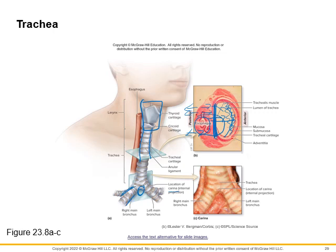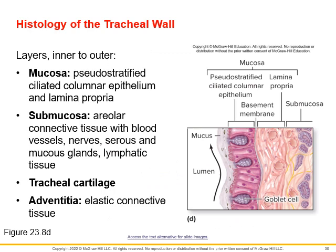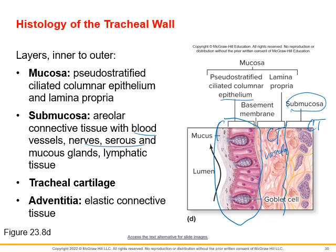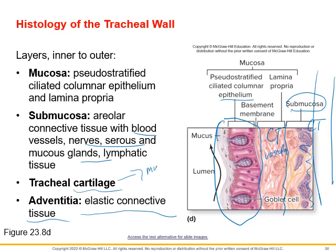Then we can see the right main bronchus and the left main bronchus. Looking at the histology of the trachea, we can see the mucosal layer and epithelium, then connective tissue underneath — because this is vascular. We have a submucosal layer — also connective tissue — but with blood vessels, nerves, mucous glands, serous glands, and lymphatic tissue running through it. The next layer is cartilage in the trachea, and then elastic connective tissue on the outside. When we get to the bronchioles, instead of cartilage, we're going to see muscle.